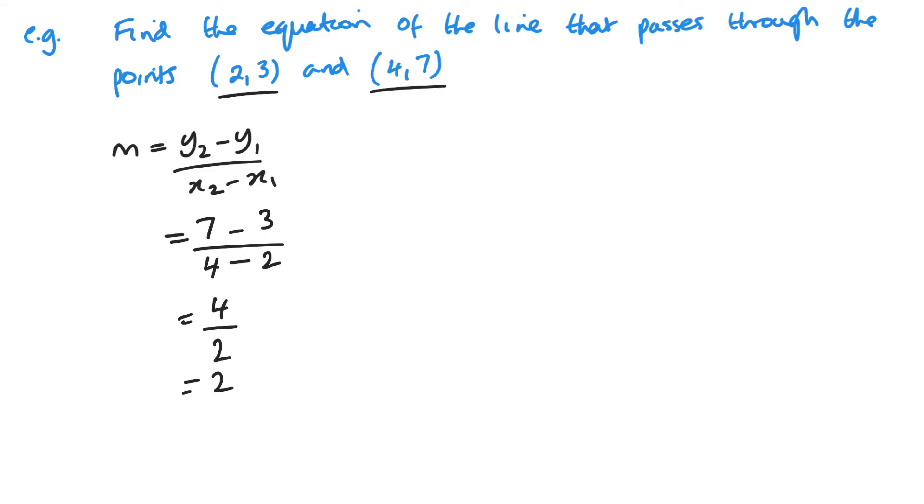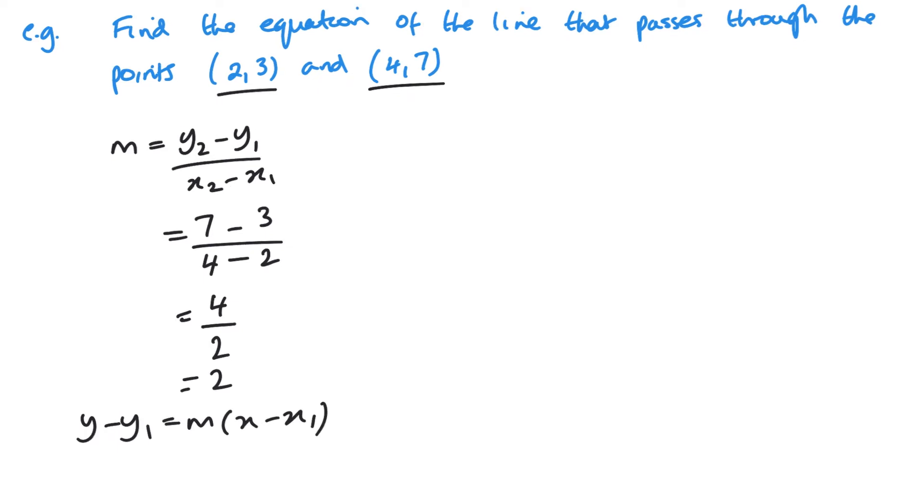Then I can substitute this into my y minus y1 equals m times x minus x1. I'm going to use the first coordinate. So we've got y minus 3 equals 2x minus 4. So my final answer here is y equals 2x minus 1.